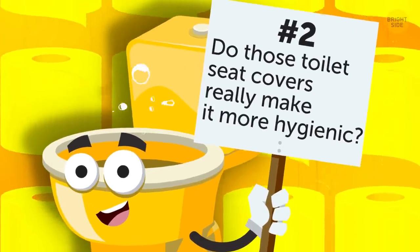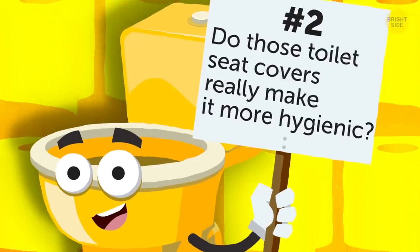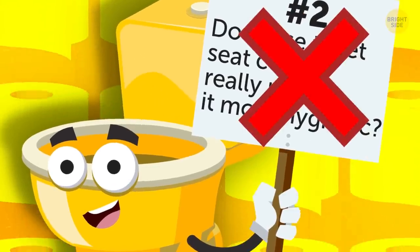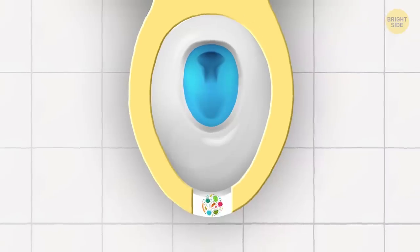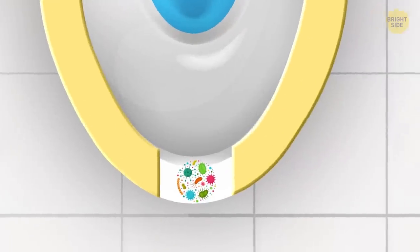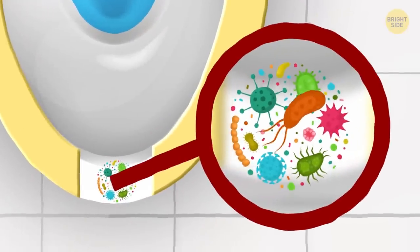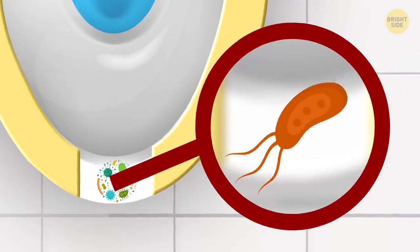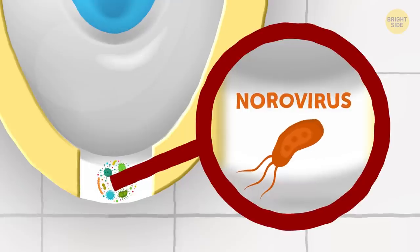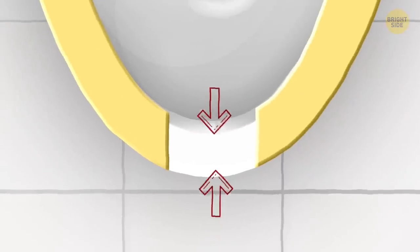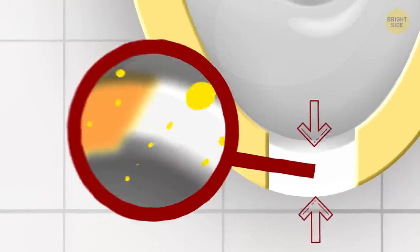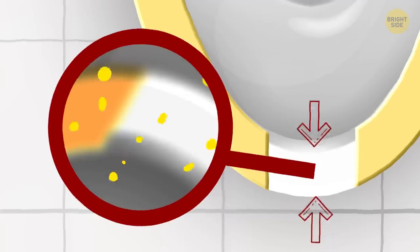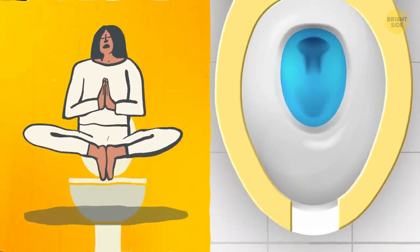Do those toilet seat covers really make it more hygienic? Sorry, but no. Not significantly, anyways. The fact is, there are some bacterium in public bathrooms that only need one cell to get inside your body in order to make you sick, such as norovirus. That little space in between the U-shaped seat may still have dribbles of urine on it, and it will just soak through the cover. Your best bet is to squat.